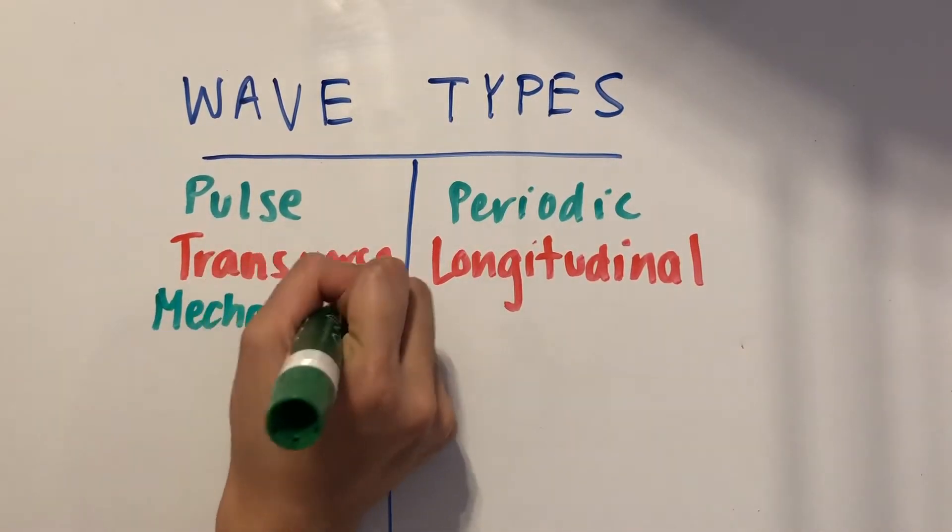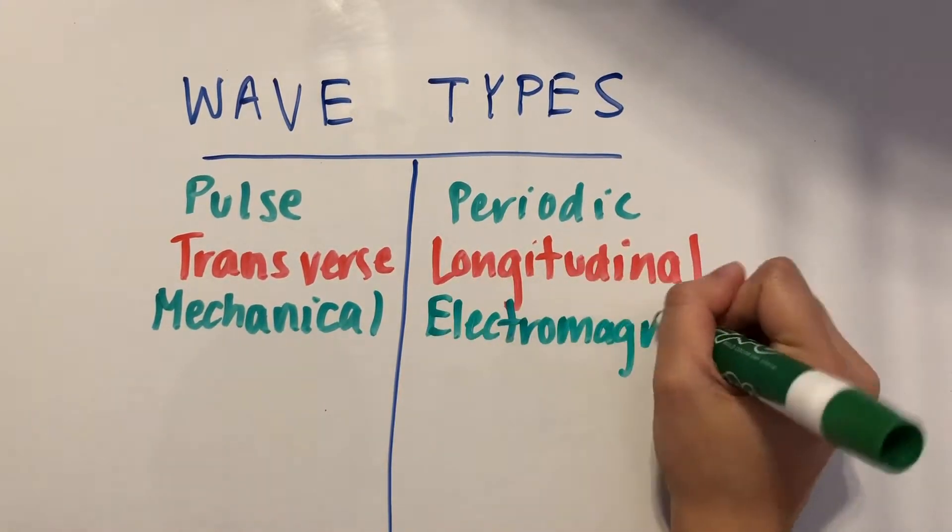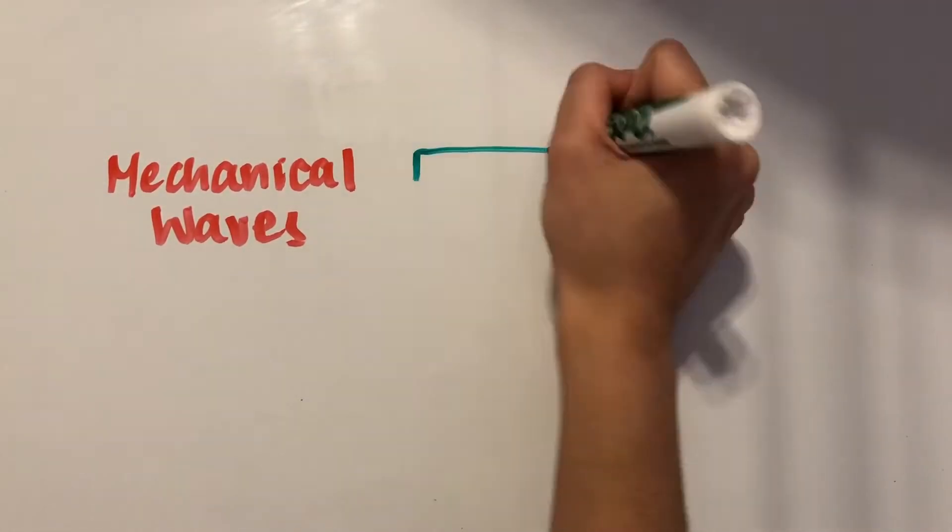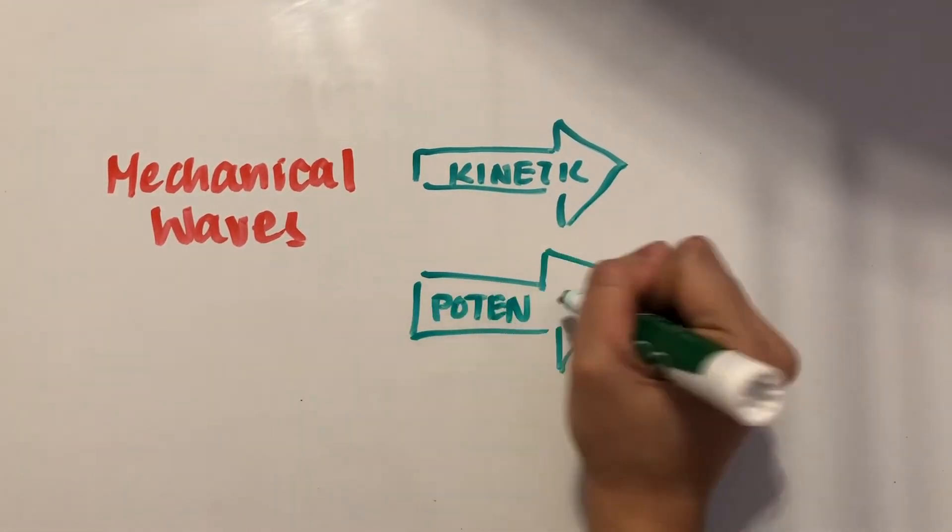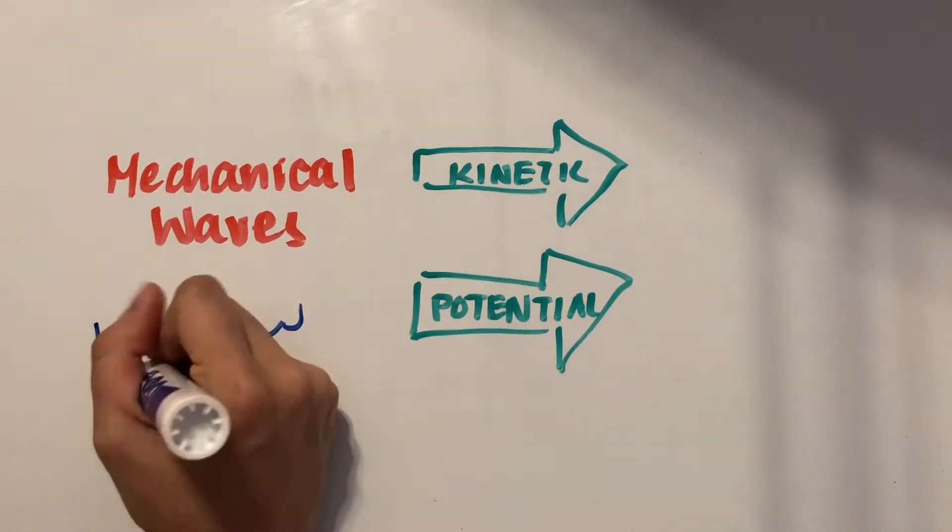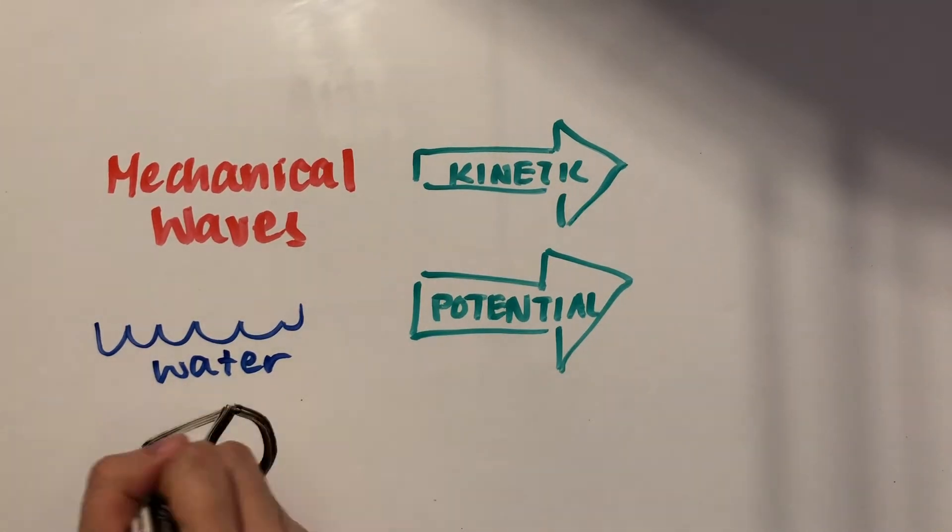We also have mechanical versus electromagnetic waves. Mechanical waves transfer kinetic and potential energy, which are two types of mechanical energy. Mechanical waves also move through matter, so a couple of examples would be a water wave or a sound wave.